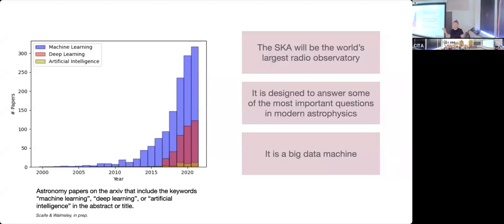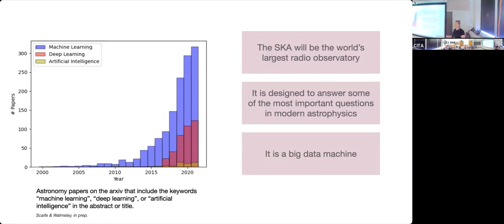The SKA will be the world's largest radio observatory, designed to answer big scientific questions, but it is also a big data machine. The quantity of data from the SKA and already from precursor instruments like ASKAP and the MeerKAT telescope means we can't just do the same kind of analysis we've done historically. Radio astronomers like to get their hands dirty, and it is surprising how much work we still do visually today. We need to automate enormous amounts of processing that currently involve a human component.